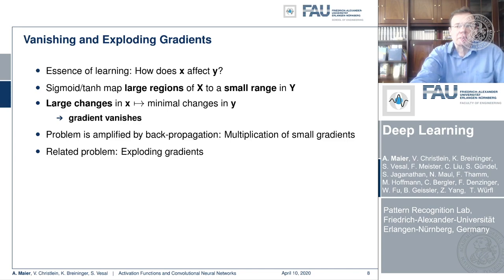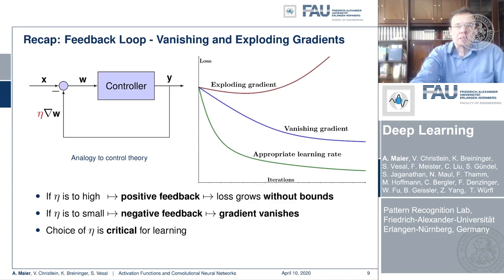A very related problem is the exploding gradient, where high values amplify each other. If you measure the loss over training iterations and don't adjust the learning rate appropriately, you get either the exploding or the vanishing gradient. But it's not just the learning rate eta — the problem can also be amplified by the activation functions. In particular, the vanishing gradient occurs with saturating activation functions, so we might want to look for better activation functions.